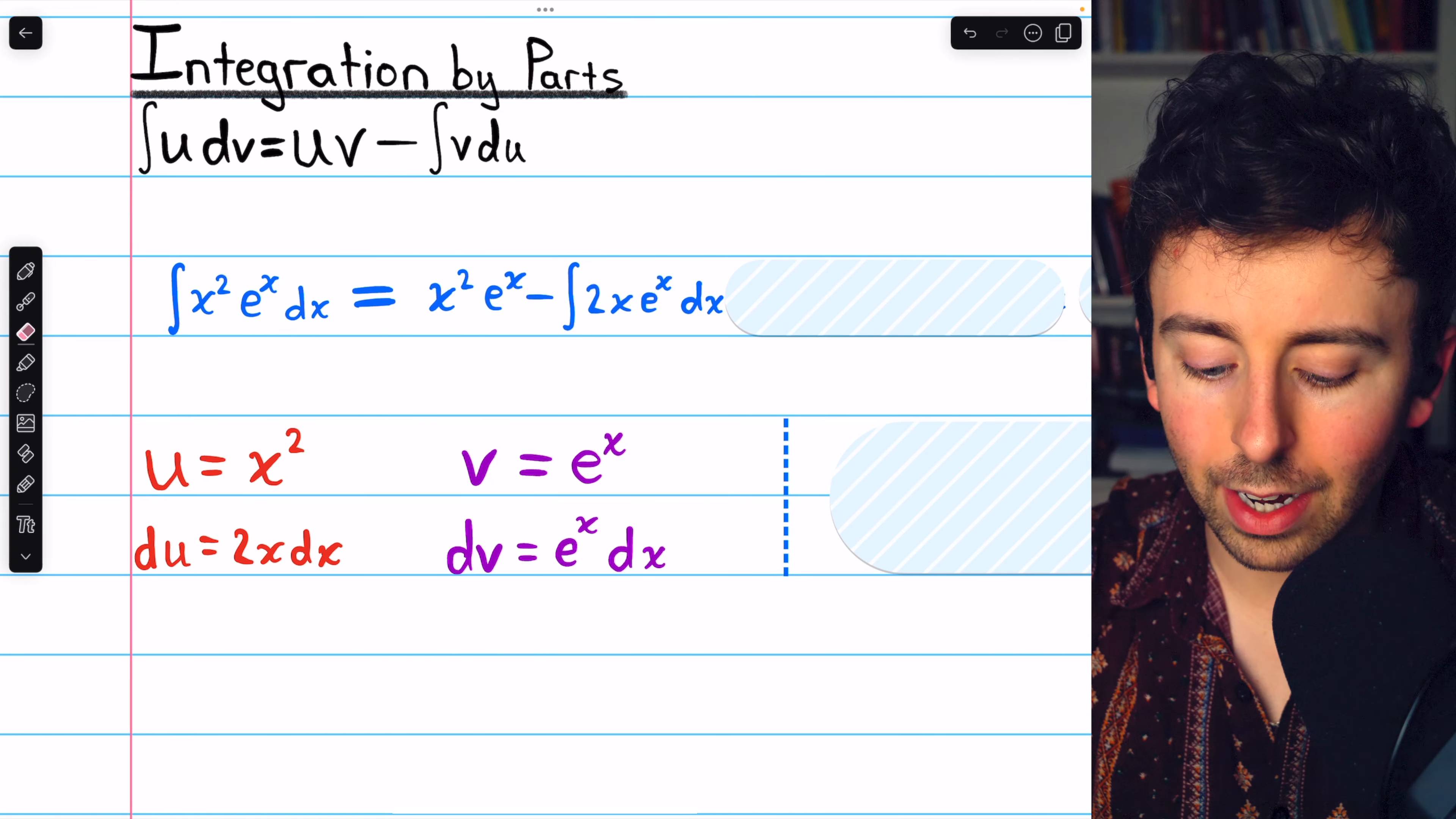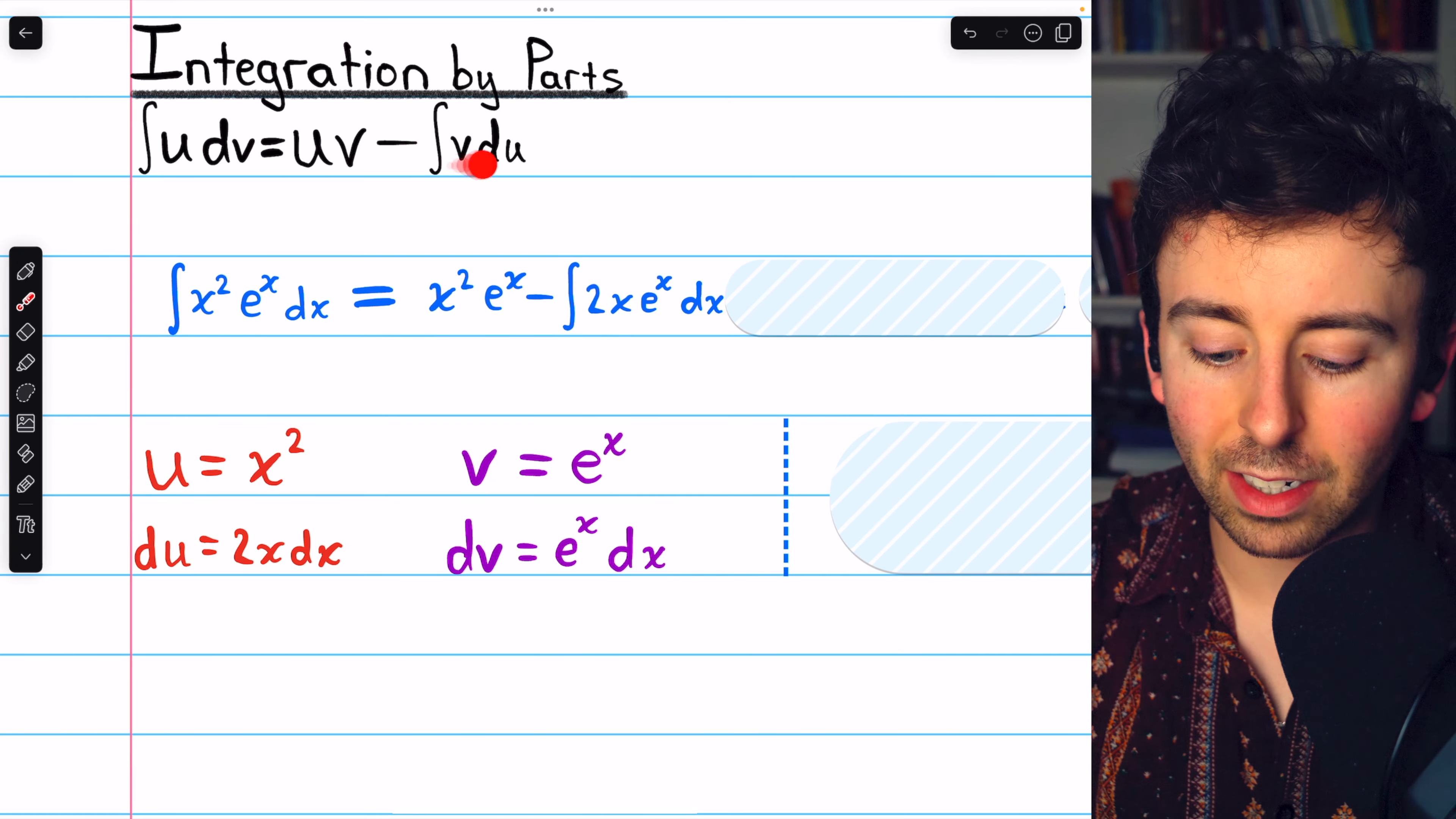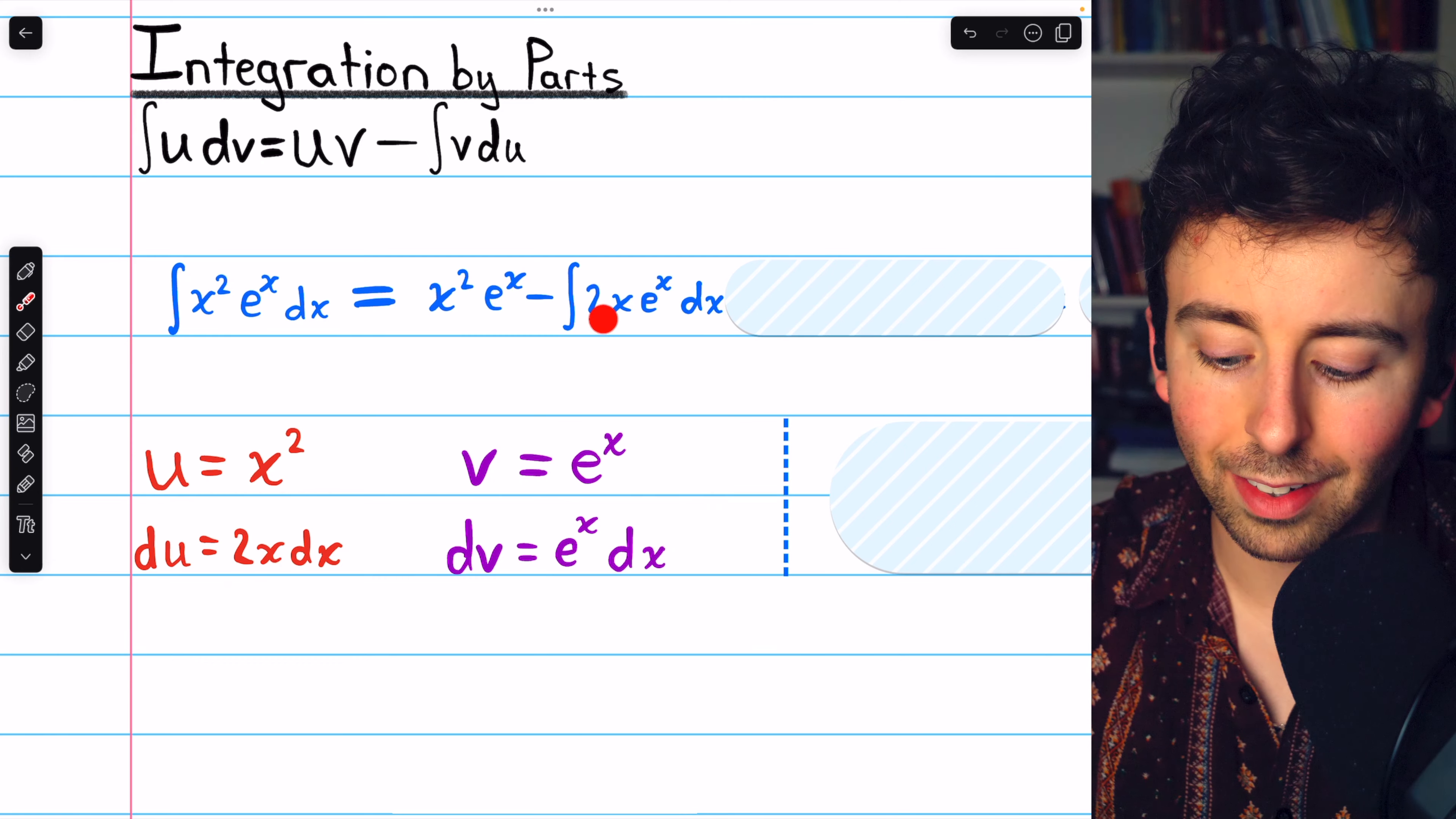Now we can go ahead and apply the integration by parts formula: uv, so x squared e to the x, minus the integral of v du. So minus the integral of e to the x times 2x dx.